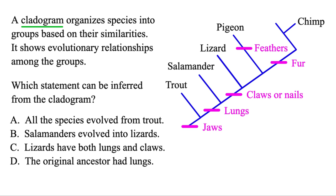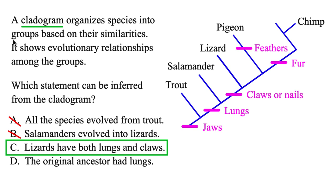If you're given a cladogram, it's just going to organize species into different groups and shows evolutionary relationships. Which statement can be inferred? 'All species evolved from trout' — but that's not what this shows. It doesn't show one thing evolving into the next. 'Salamanders evolved into lizards' — they don't evolve one thing into the next like that, they just share common characteristics, so that's not true. The third one — 'lizards have both lungs and claws.' Wherever you are in the diagram, they have everything below it, so they do have claws and lungs — that is true. The last one says the original ancestor had lungs — that's not true, but it would be true if they said jaws instead.